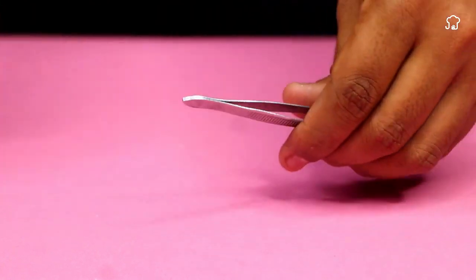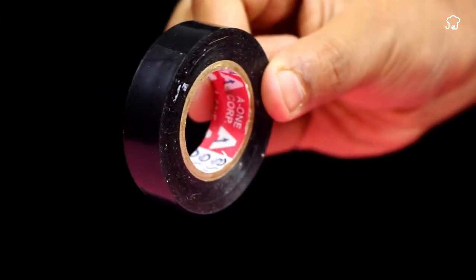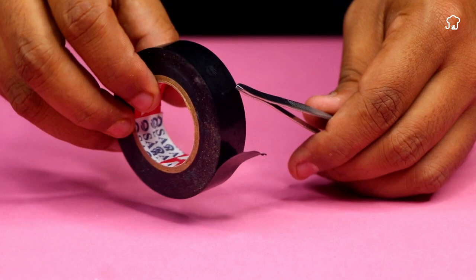Then, we'll take a clamp and adhesive tape. We'll wrap the clamp with the adhesive tape to isolate it and avoid possible short circuits or electrical discharges.